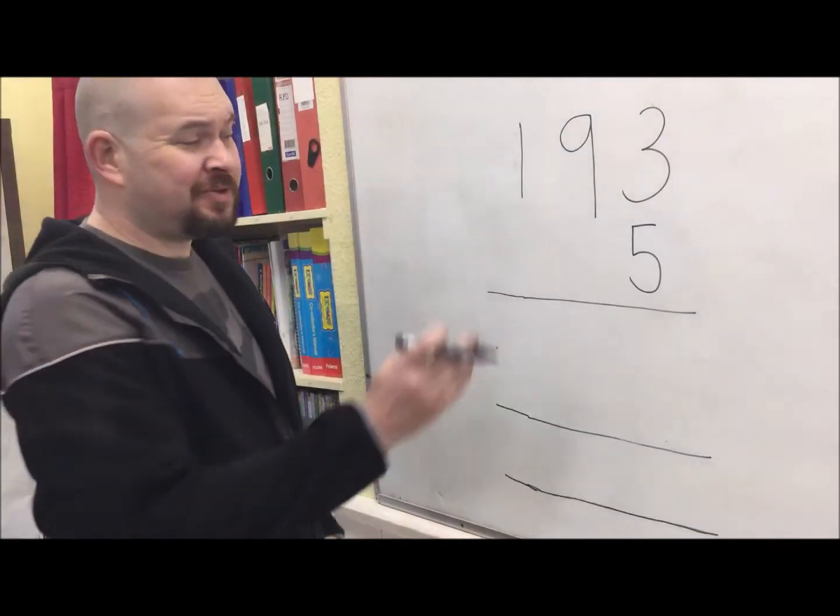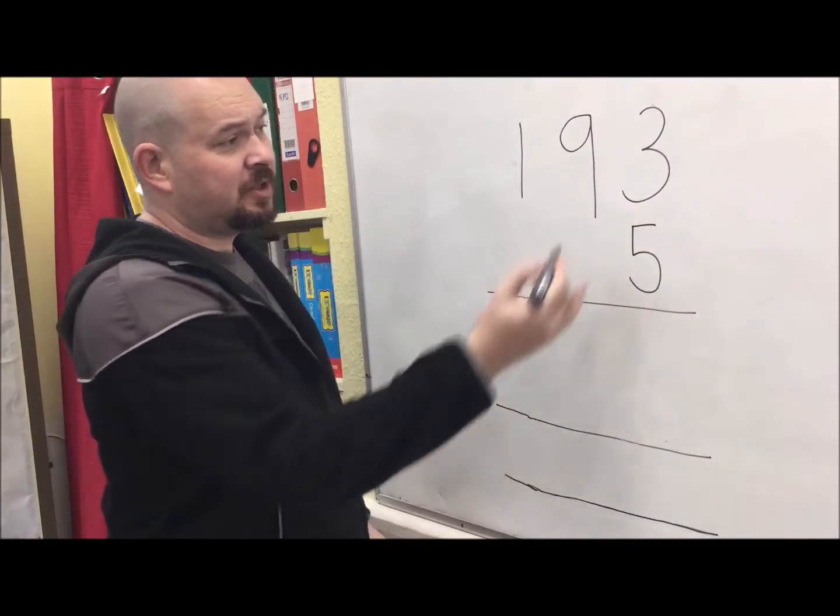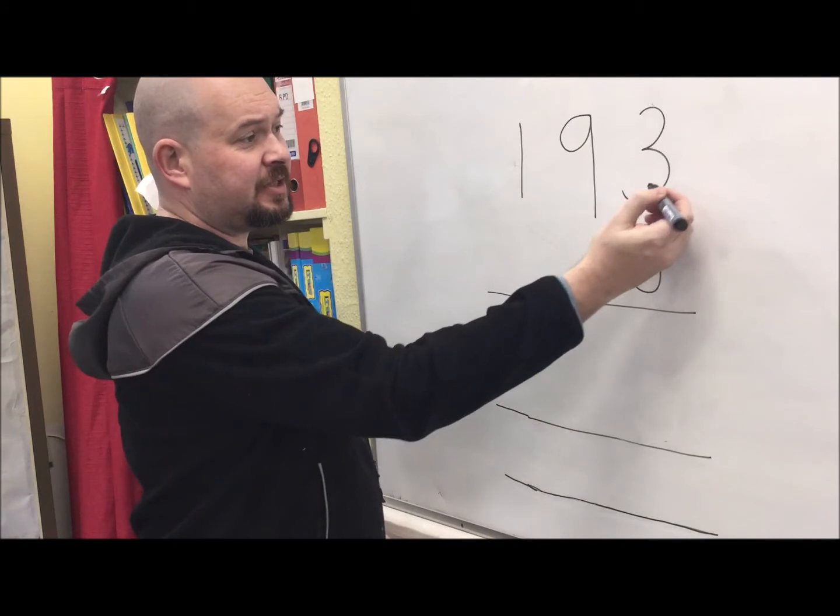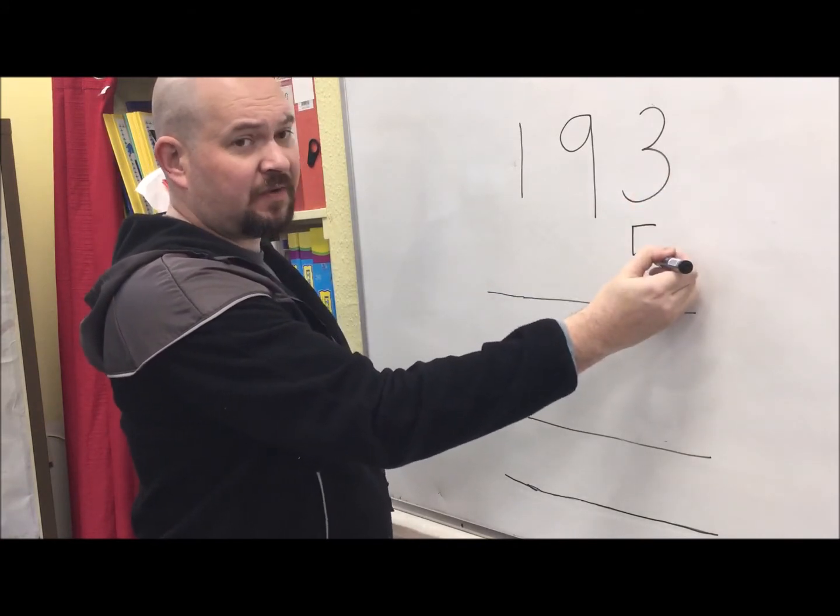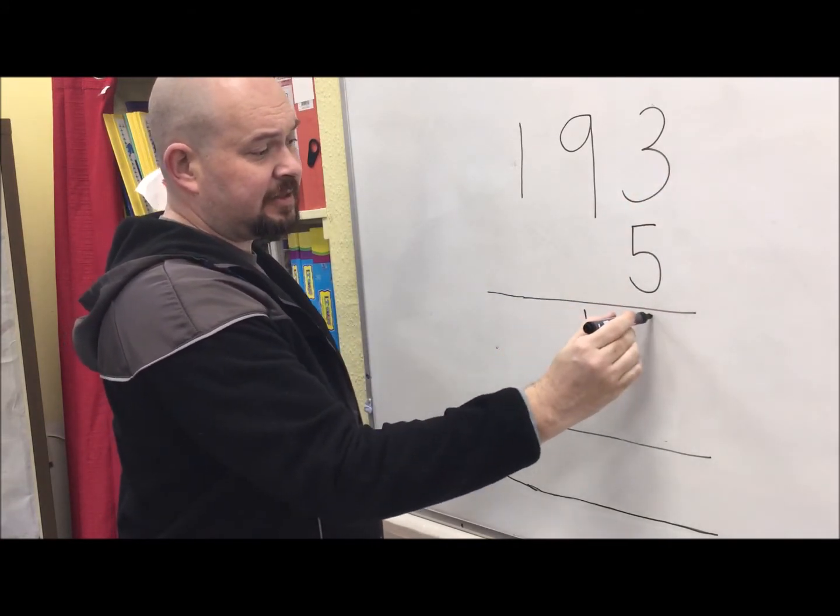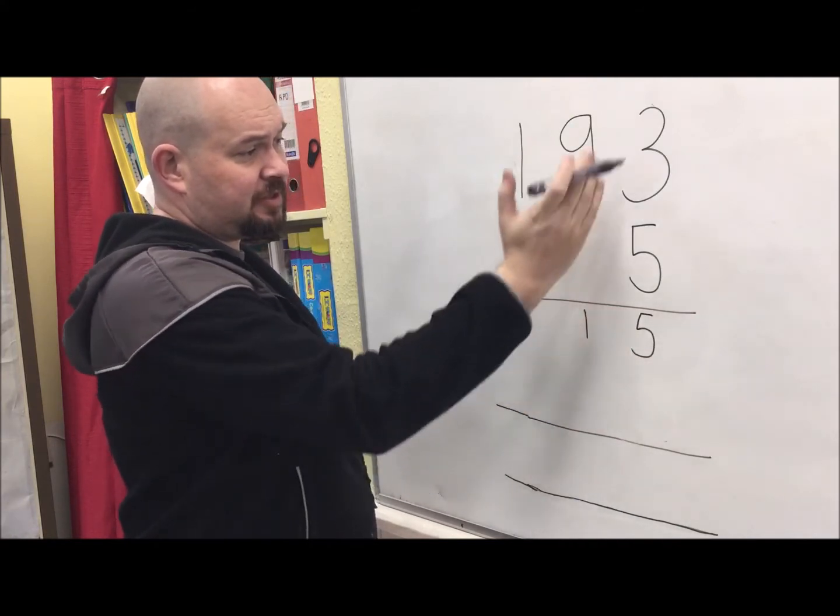In this next example, we're using hundreds, tens and ones times ones. So exactly the same process. 3 times 5, I know that's 15. Making sure the tens and ones are lined up with the tens and ones.